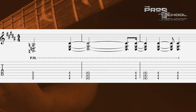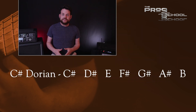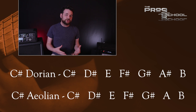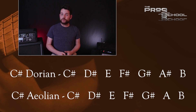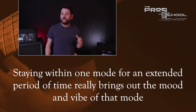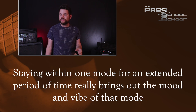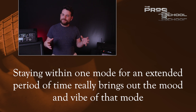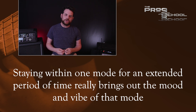He also plays an A major chord from time to time in this section, at two minutes and forty-two seconds for example. C sharp Dorian has an A sharp in it, so this A major chord is actually coming from C sharp Aeolian, or natural minor. This calls back to the first half as well, which was rooted on that note of A. We're mostly staying within one mode in the second half of the tune, really milking the sound and vibe of this mode.